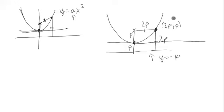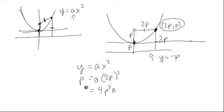Now, this is a point on the curve y = ax squared. So if we were to plug in 2P for x and P for y, we would have 4P squared times A equals P. Now, assuming P is non-zero, we can divide by P and get 1 equals 4AP, or P equals 1 over 4A.